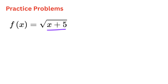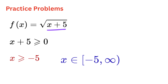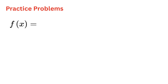Let's go through practice problems. First: f(x) = square root of (x + 5). The expression inside the square root, x + 5, must be ≥ 0. Solving gives x ≥ −5. So the domain is from −5 to infinity, including −5.